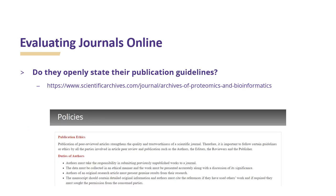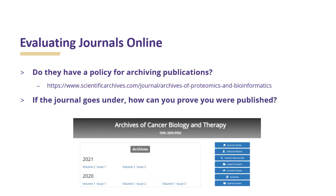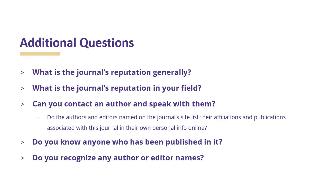Does the journal openly state their publication guidelines? These are necessary for authors to know what is required for publication in the journal. Does the journal have a policy for archiving publications? For example, if the journal goes under, how can you prove that you were published? Some additional questions you may want to ask are: What is the journal's reputation generally and in your field? Can you contact an author and speak with them? Do you know anyone who has been published in this journal, and do you recognize any author or editor names?